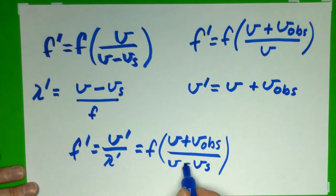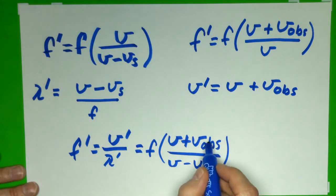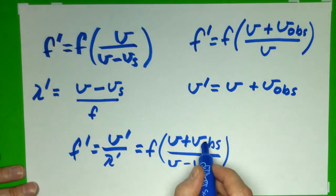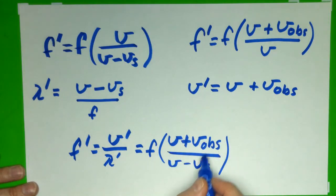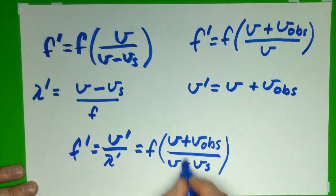Now, this minus sign stays there. And so if the source is approaching the observer, this would be positive. I'd have minus a positive number, so V minus a positive number. If this was receding, I'd have V plus a negative number. So these algebraic signs stay here no matter what, and then these variables can take positive or negative values based on whether they are approaching or receding from the other.